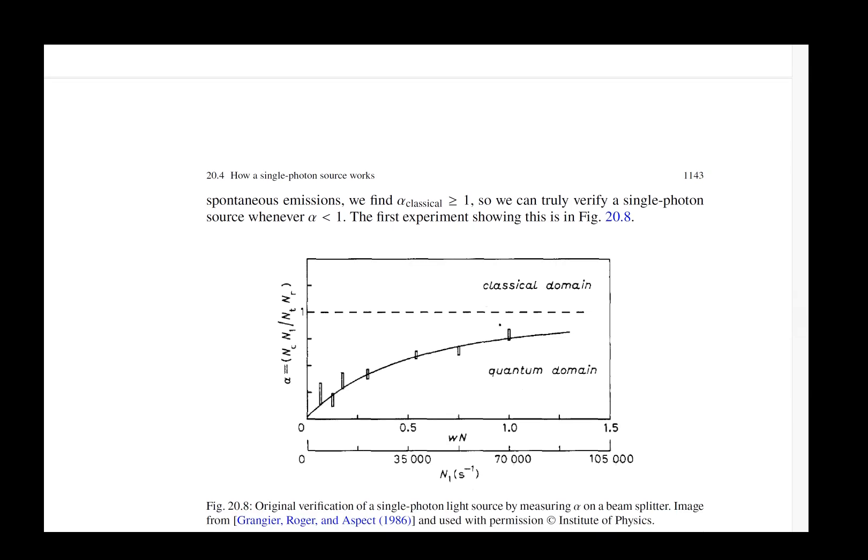And that measurement allows us to do what's called the G2 measurement. And that G2 measurement, when this coefficient alpha is less than one, then you have a single photon source. If you put a dim laser on this experiment with the beam splitters, you would always get an alpha coefficient that was higher than one.